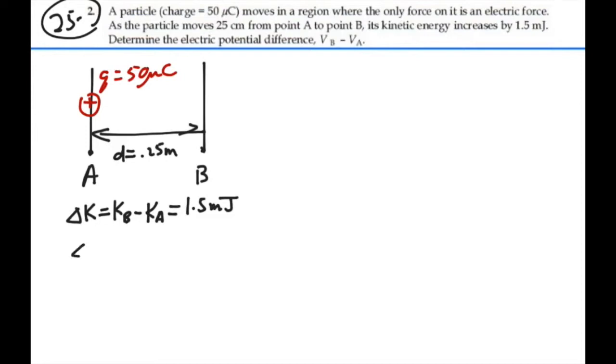And we know that the change in kinetic energy plus the change in potential energy will be zero because there's going to be no energy added to this field. So the change in potential energy will equal the negative change in kinetic energy, and that will be a negative 1.5 millijoules.